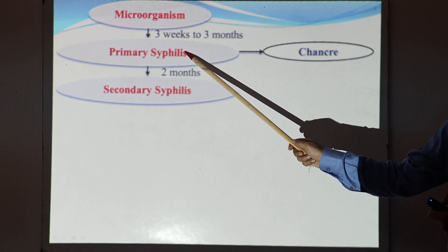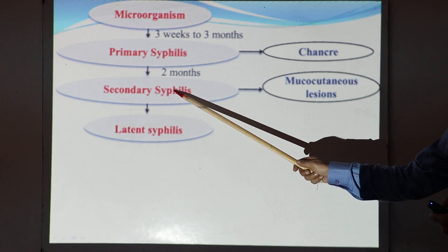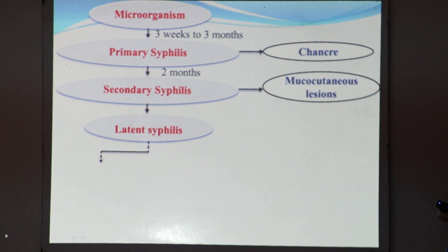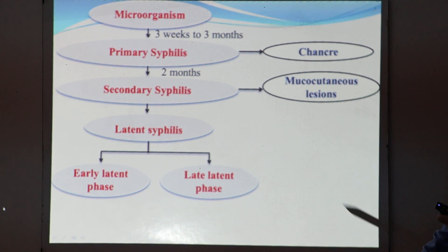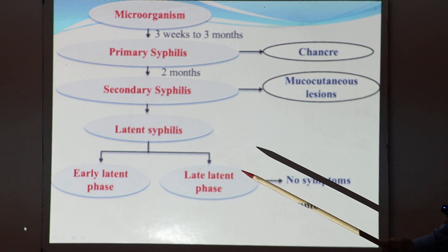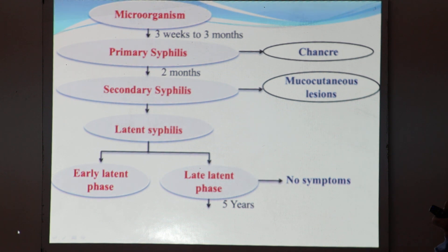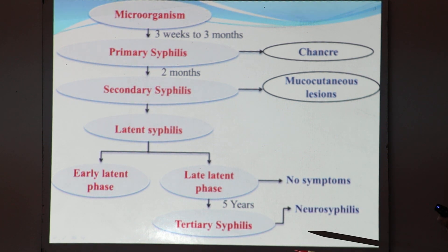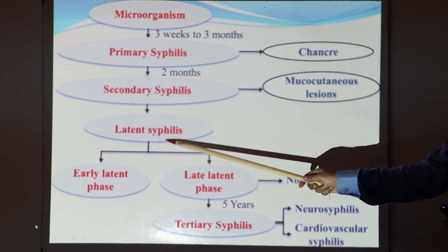After two months, primary syphilis changes into secondary syphilis, and the symptoms of secondary syphilis include mucocutaneous lesions. Secondary syphilis then changes into latent syphilis, which can be either early latent or late latent — in both these phases, there are no symptoms. Then, approximately after five years, latent syphilis changes into tertiary syphilis, with manifestations including neurosyphilis and cardiovascular involvement.